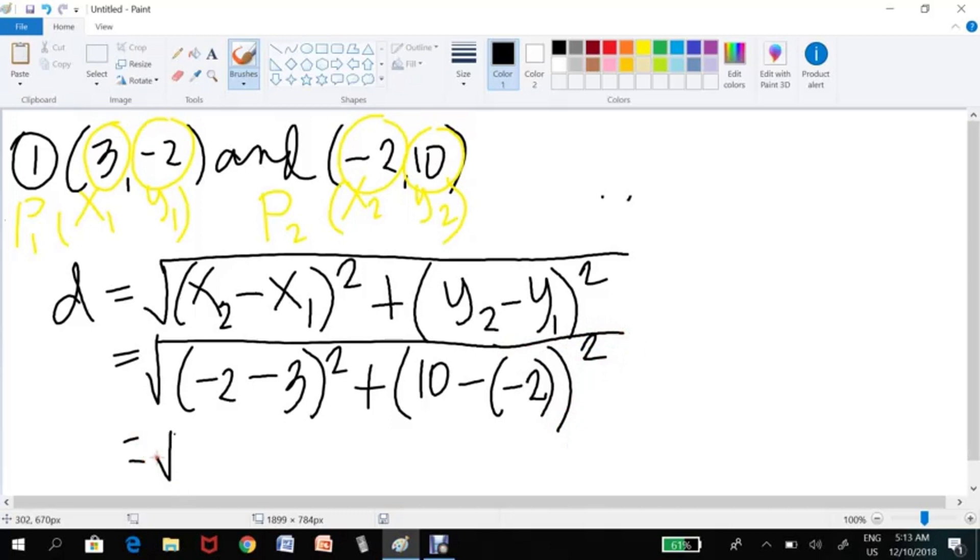Simplifying, we have -2 minus 3. That is -2 minus 3. That would be -5 squared. What's important here is the addition and subtraction of integers. Be careful with the signs. If we have two negatives, negative, negative, then we add and copy the common sign, just like -2 minus 3. That's -5. Add, then copy the common sign.